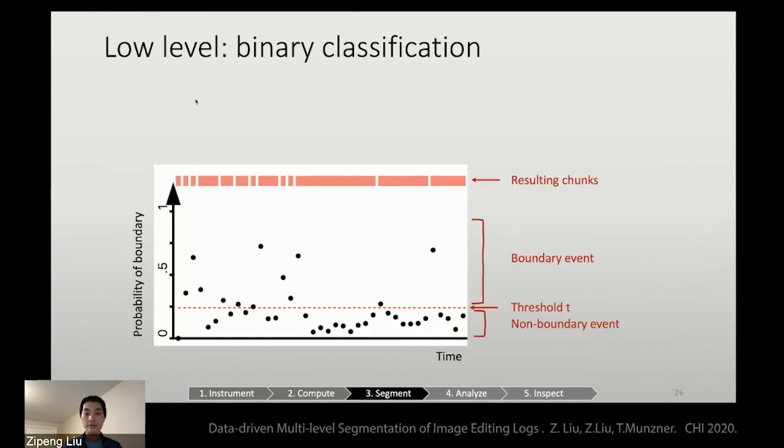After the training, we can plot the data on this chart, where x-axis is time. Each dot is an event laid out on the screen from left to right according to time. And the y-axis is the probability of boundary. Then we can draw a threshold, meaning the dotted vertical line, such that the events above this line are categorized as boundary events, while the dots below this line are non-boundary events.